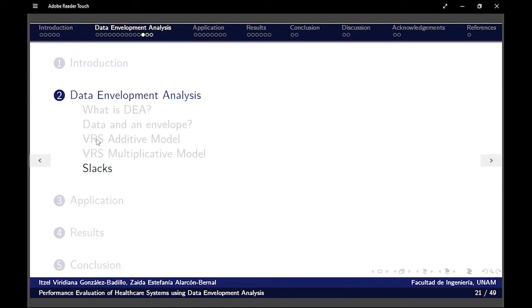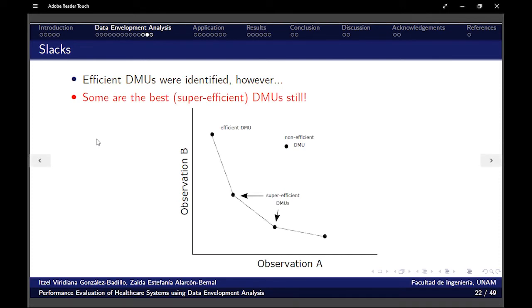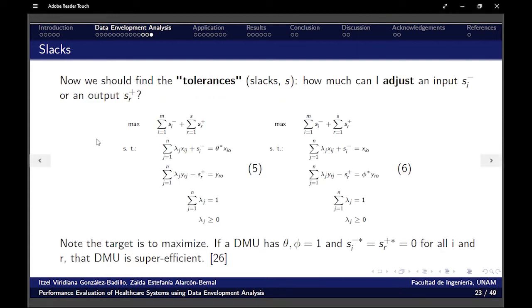Now is the part of the slacks. With additive VRS model, we found the efficient DMUs. However, of those efficient DMUs, still there are some that are the best, right? So we have to know which ones are they. This is found by determining the tolerances, the slacks, that are how much can I add just an input or an output, but only itself, only one of them.